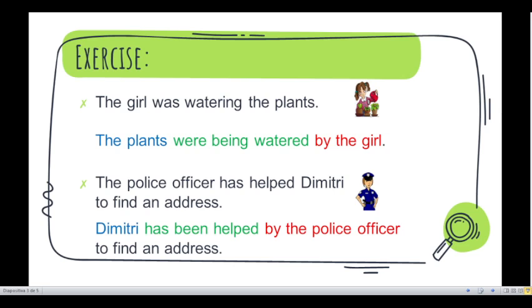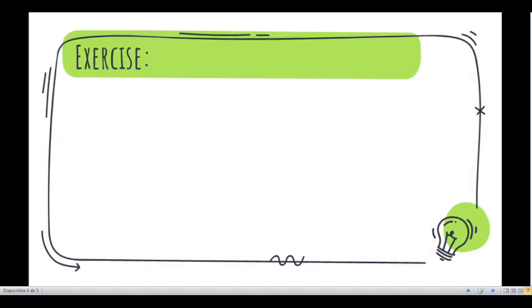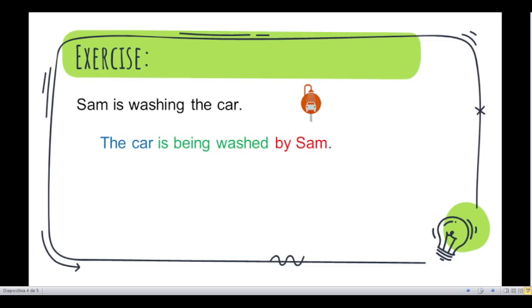Let's continue with two more sentences. Sam is washing the car. What is the passive of that sentence? The car is... is what? Let's see the answer. The car is being washed by Sam. Okay. Very good.